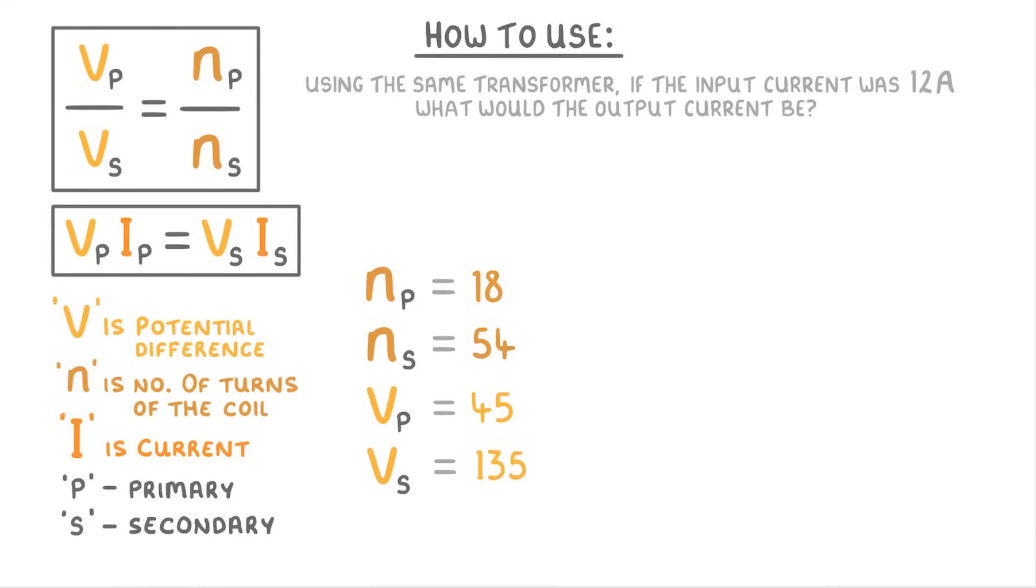For this one, we've just been told that Ip is 12 amps and we're looking for Is. So this time we're going to have to use this second equation.